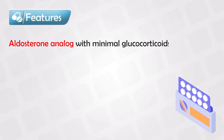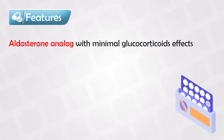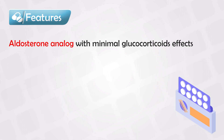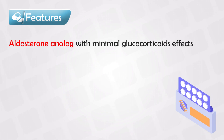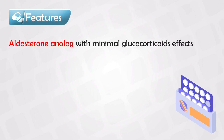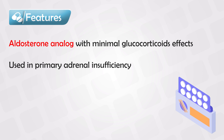This medication is a synthetic analog of aldosterone with some glucocorticoid effects. So we will have both the effects of aldosterone mainly and some effects of glucocorticoids. It replaces mostly all of the action of the adrenal glands, which is why we use it in cases of primary adrenal insufficiency.